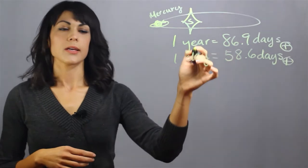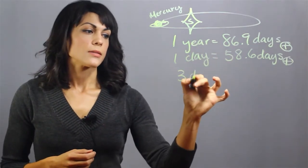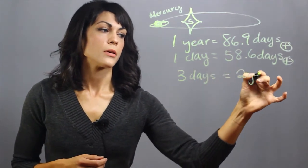As you can tell, a day is pretty much a year, and in fact, three days on Mercury is equal to two years on Mercury.